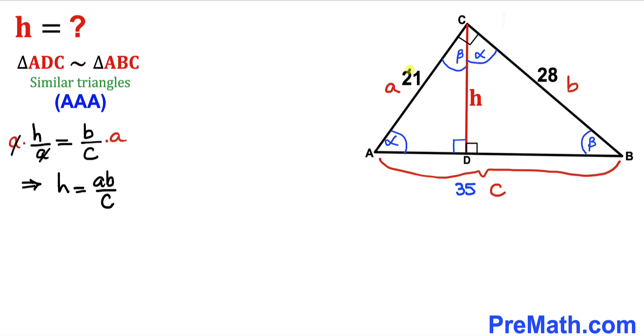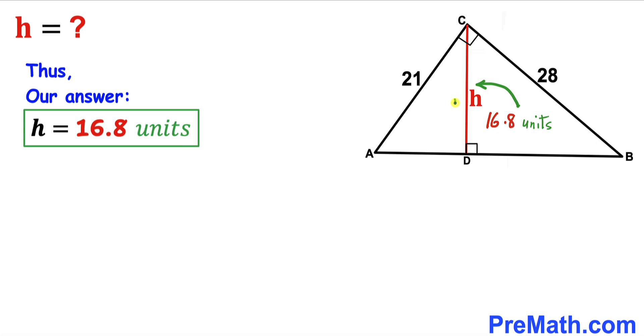Now we know that our a value is 21, b value is 28, and c value is 35. So let's fill in the blank. H equals 21 times 28 divided by 35, and if we simplify everything our height H turns out to be 16.8 units.